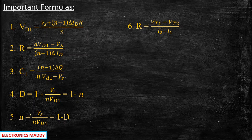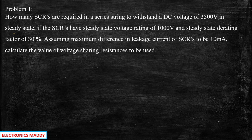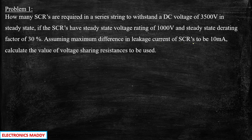Now let's get started with problem number one. Let us first try to understand what the problem is all about and gather the requirements. They've given: how many SCRs are required in a series connected string to withstand a DC voltage of 3500 volt in steady state, if the SCRs have a steady state voltage rating of 1000 volt and steady state derating factor of 30%?